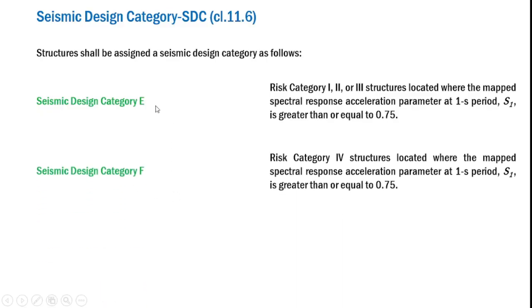Now let us discuss category F. Just like category E, the seismic hazard level is exactly the same — the spectral response acceleration at one second, S1, is greater than or equal to 0.75. The difference is that category F includes risk category 4 structures, which is a much higher risk category compared to 1, 2, or 3. So for categories E and F, we use the parameter S1 along with the corresponding risk category (1, 2, 3, or 4) to determine which applies.